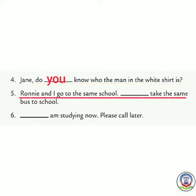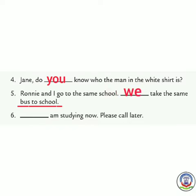Number 5: 'Roni and I go to the same school. Dash take the same bus to school.' Roni and I — when two people including the speaker are mentioned, we use 'we'. Answer: 'Roni and I go to the same school. We take the same bus to school.'